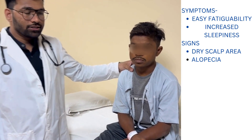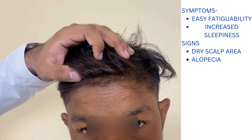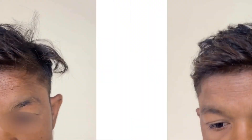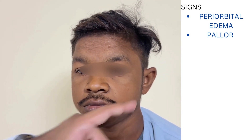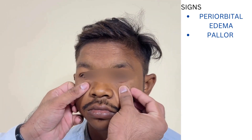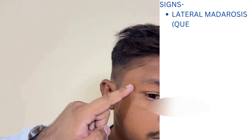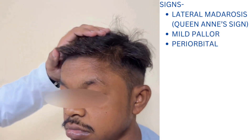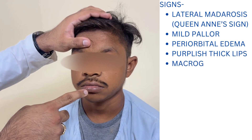On general physical examination, we found there is a parietal thinning alopecia of the head. Coming to the eyes, there is periorbital edema present on both sides and there is mild anemia — that is pallor. Coming to the hair, we have lateral madarosis — loss of the lateral half of the eyebrows — and then we have thick lips.